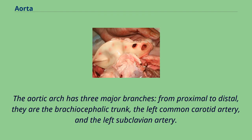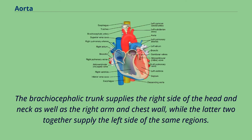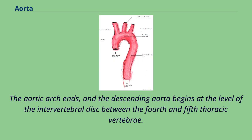The aortic arch has three major branches: from proximal to distal, they are the brachiocephalic trunk, the left common carotid artery, and the left subclavian artery. The brachiocephalic trunk supplies the right side of the head and neck as well as the right arm and chest wall, while the latter two together supply the left side of the same regions. The aortic arch ends and the descending aorta begins at the level of the intervertebral disc between the fourth and fifth thoracic vertebrae.